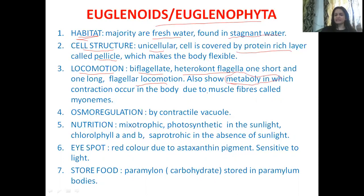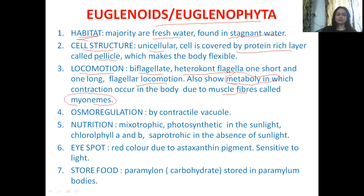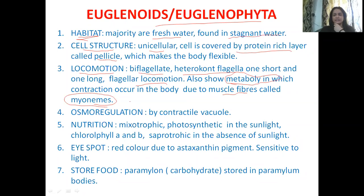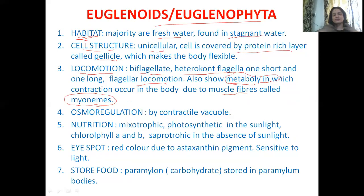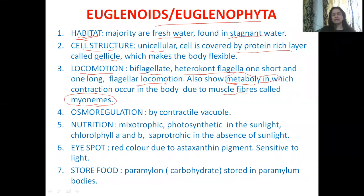That phenomenon is called metaboly. In Euglena's case, the body is one cell, but within that cell, there are muscle fibers present, commonly known as myonemes. With the help of these muscle fibers, the whole body undergoes contraction, producing movement in the body without the need to move the flagella. The organism can show movement through the regular contraction of the whole body, assisted by the muscle fibers called myonemes. This kind of movement, due to contraction of the whole body, is commonly known as metaboly.